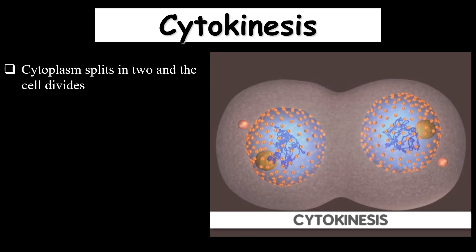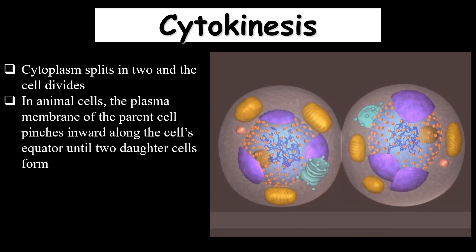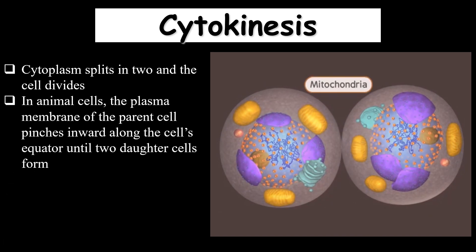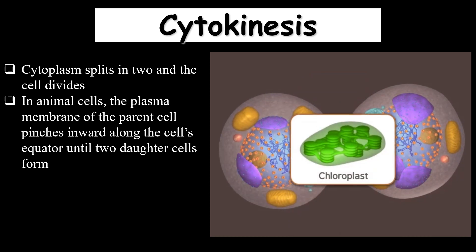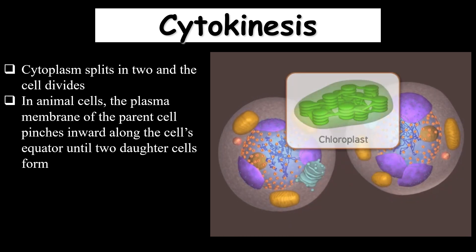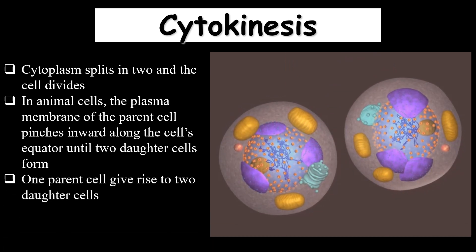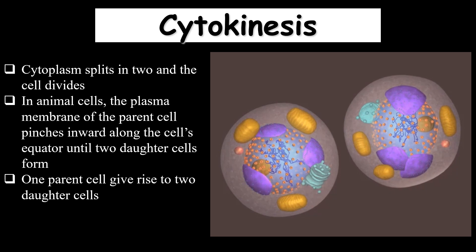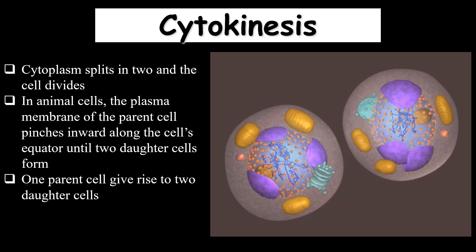In cytokinesis, the cytoplasm splits into two as the cell divides by the inward movement of the cytoplasm. In animal cells, the cytoplasm pinches inward and divides into two. Each cell will have an equal number of chromosomes and all organelles and materials are duplicated and divided equally, so the one parent cell gives rise to two daughter cells.